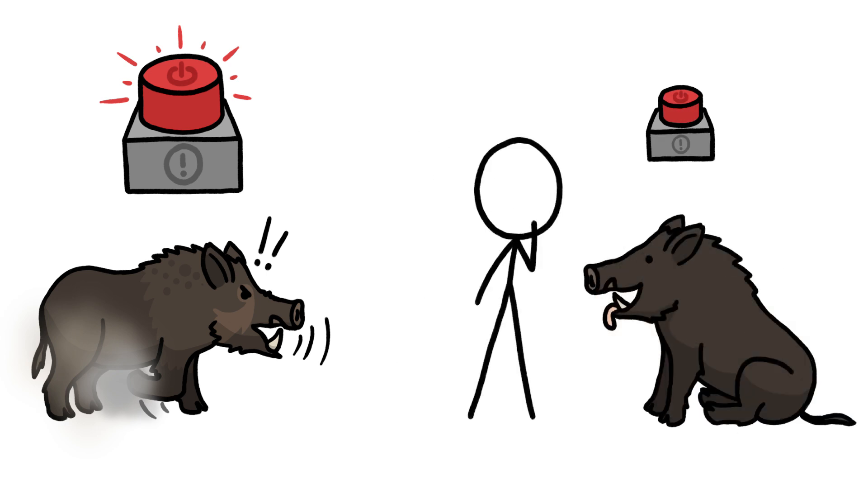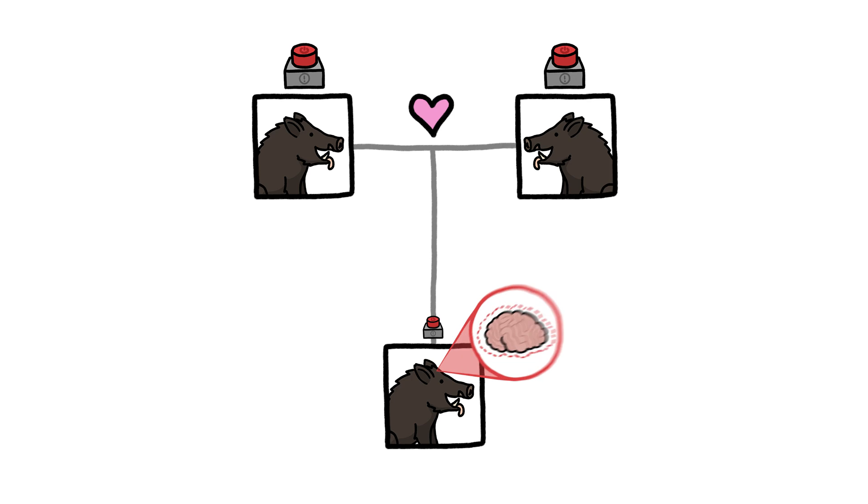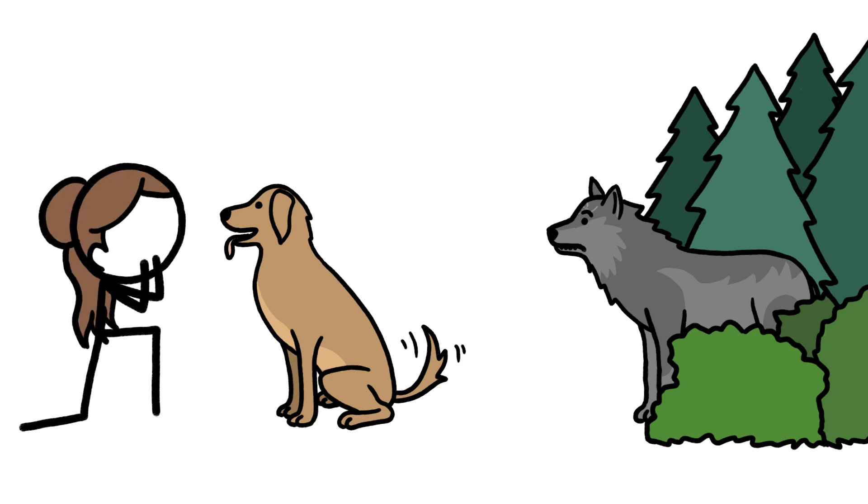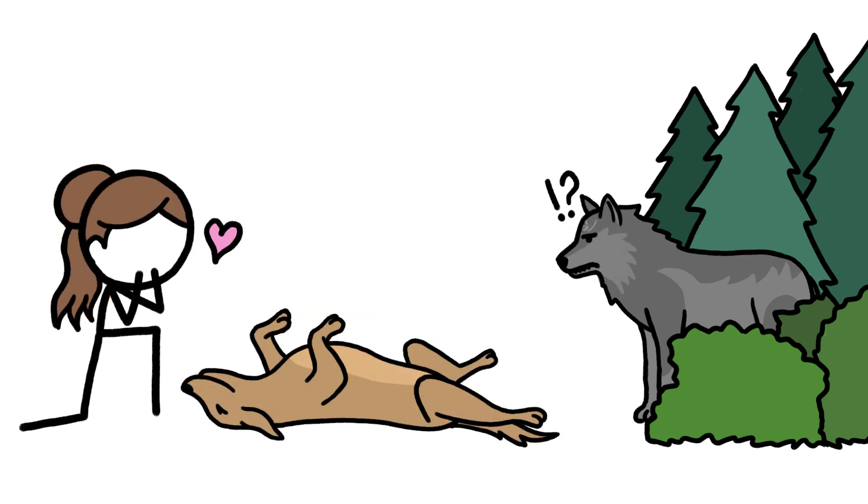So those are the ones we probably would have tried to domesticate. And by breeding the tamest animals with each other, we shrunk their panic buttons, and therefore their brains, even further. In short, domesticated animals have formed long-term partnerships with humanity by literally losing their minds.